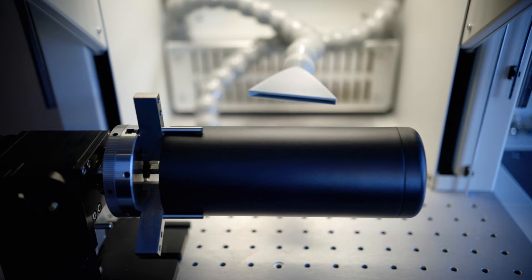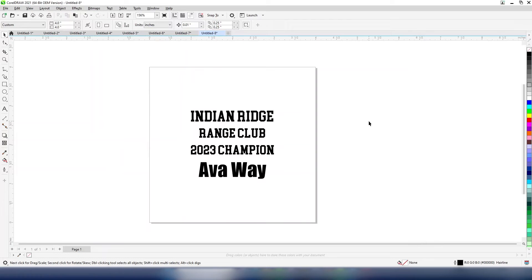Now we'll go over to the software and we'll take a look at what we're doing over there. We've got a graphic setup in here that we're going to engrave on that powder-coated tumbler. I've got my space here, my page in CorelDRAW 4x4.